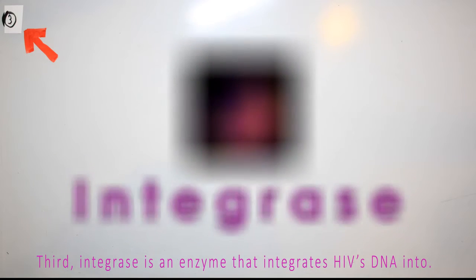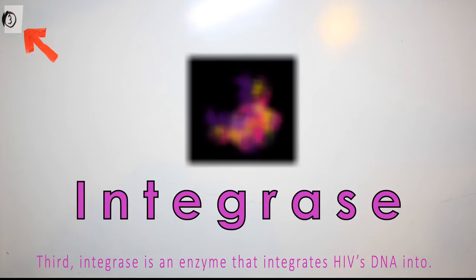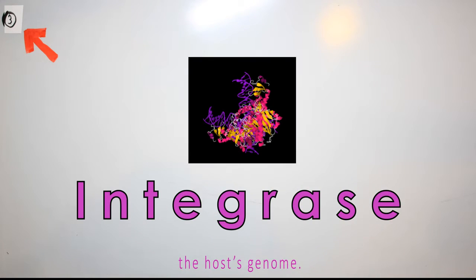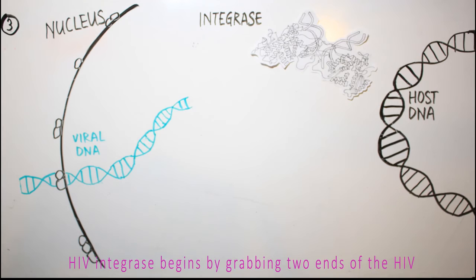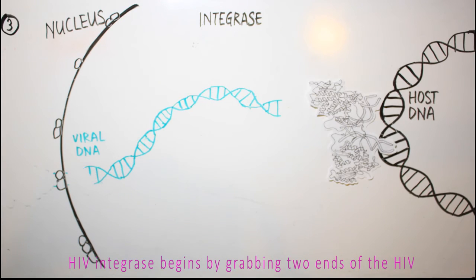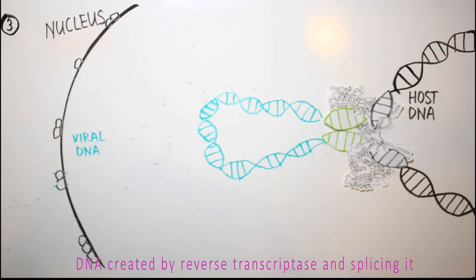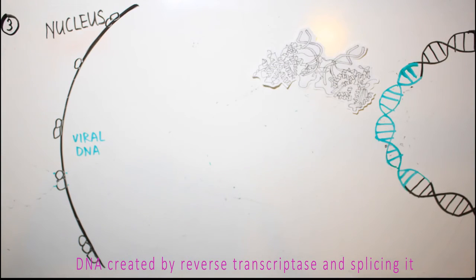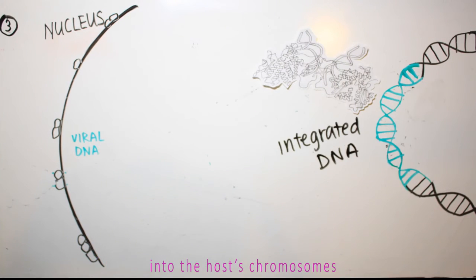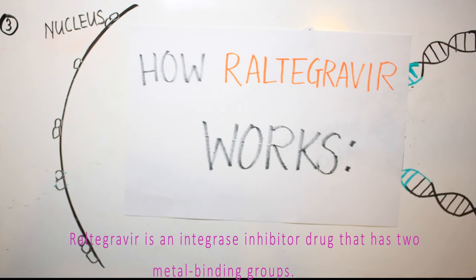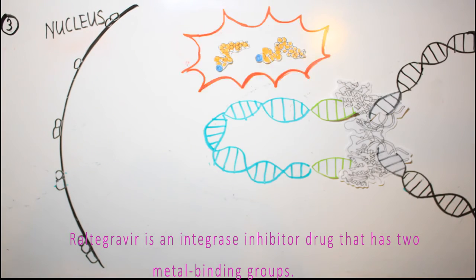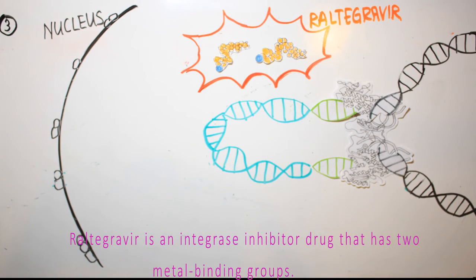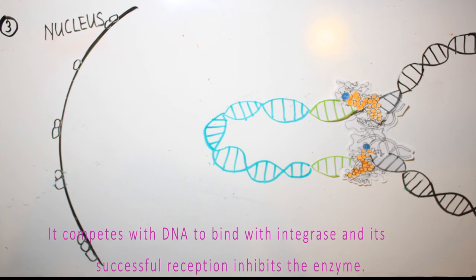Third, integrase is an enzyme that integrates HIV's DNA into the host's genome. HIV integrase begins by grabbing two ends of the HIV DNA created by reverse transcriptase and splicing it into the host's chromosomes. Raltegravir is an integrase inhibitor drug that has two metal binding groups. It competes with DNA to bind with integrase, and its binding inhibits the enzyme.